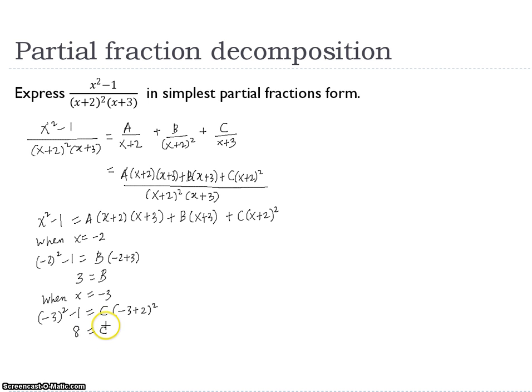So finally, we still have to find A. To find A, maybe we can just use a simple compare coefficient method. If we expand this, you can see there's x squared. If we expand this, we have Bx. If we expand this, we have Cx squared together with other terms. So maybe we just consider to compare coefficient of x squared.